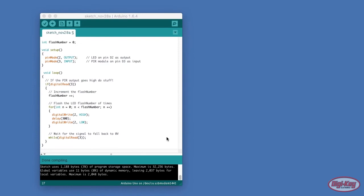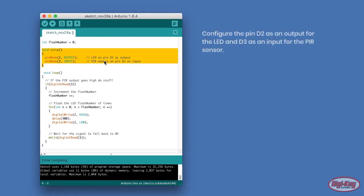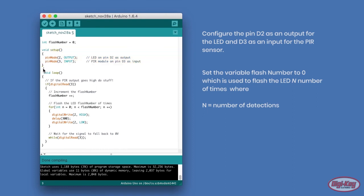The first step in our code is to configure the pin D2 as an output for the LED and D3 as an input for the PIR sensor. With these configured, we then set the variable flashNumber to 0, which is used to flash the LED n number of times, where n represents the number of detections.